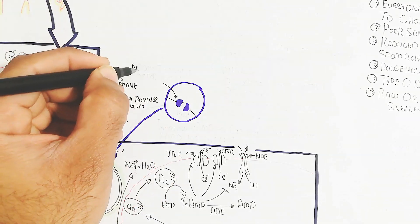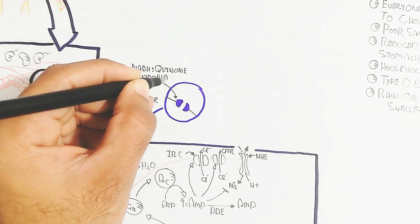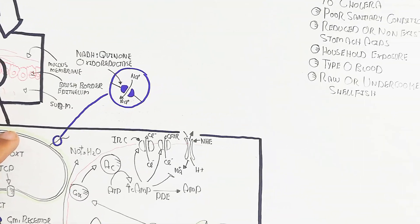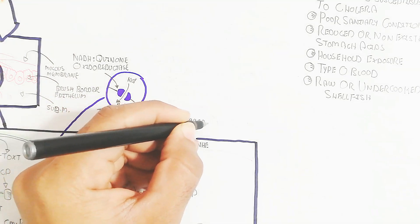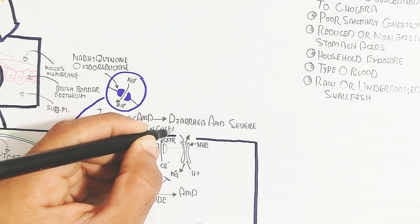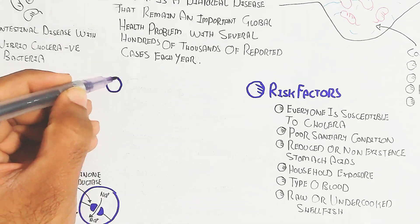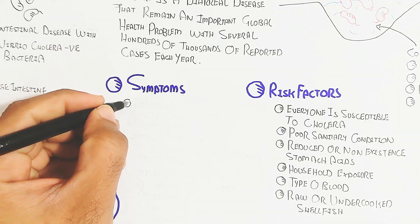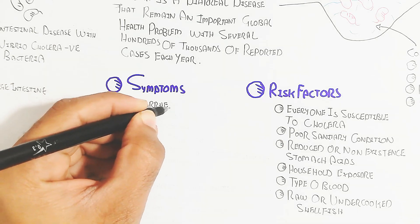This is the flagellum - one flagellum is present in Vibrio cholerae. It contains NADH quinone oxidoreductase, which leads to outflux of sodium. This also increases cyclic AMP, leading to diarrhea and severe fluid loss in cholera due to triggering of chloride outflux.